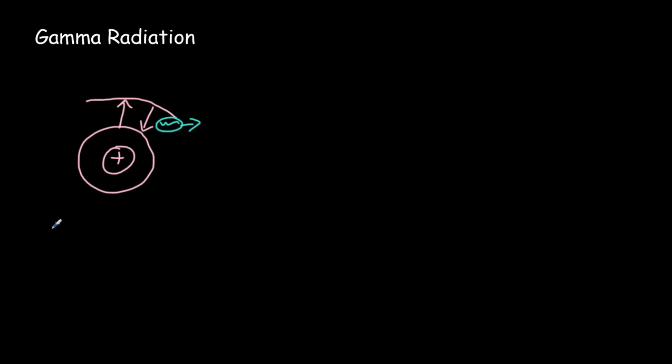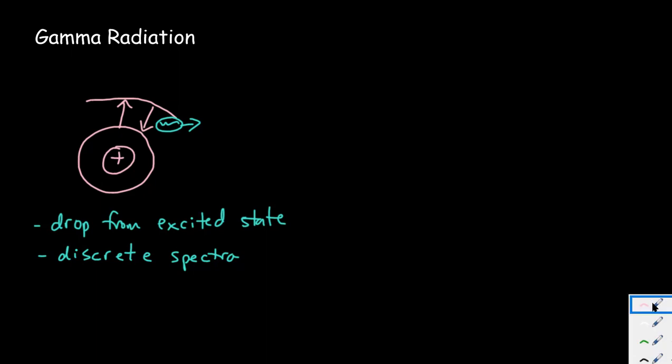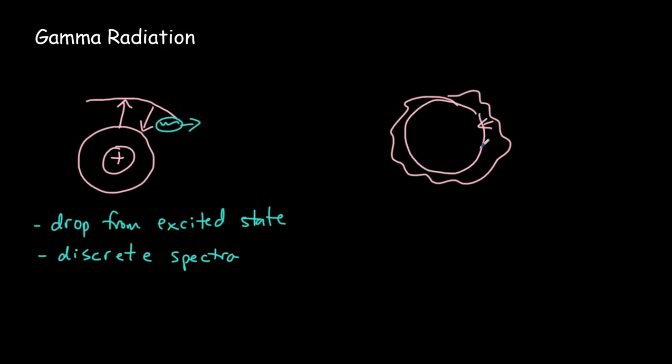But the idea here is that we have a drop from an excited state, and because there would be numerous energy levels within an atom, you would get this discrete spectra of different types of radiation that would be produced. In the same way, we can think of a nucleus getting into an excited state and then dropping down to a ground state. And when that happens, a photon can be emitted. But now it's a higher energy photon. It would be a gamma photon.